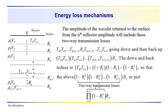This set of factors represents the two-way transmission loss, represented in simplified notation. Using the pi notation, we're taking the product of 1 minus R sub i squared, as i goes from 1 to n minus 1. This series of factors is scaling the amplitude from the nth reflection.